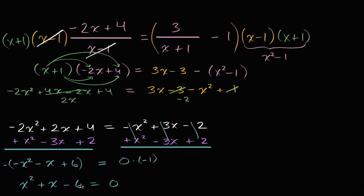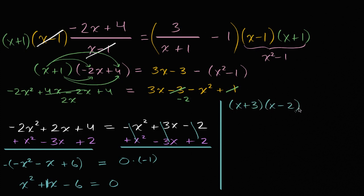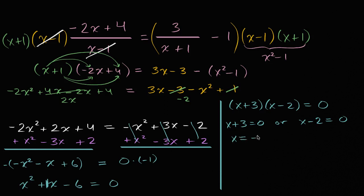We can factor this quadratic. We need two numbers whose product is negative six and that add up to one: positive three and negative two work. So we factor as x plus three times x minus two equals zero. Check: three times negative two is negative six, and three x minus two x is positive x. This equals zero when x plus three equals zero, giving x equals negative three, or when x minus two equals zero, giving x equals two.